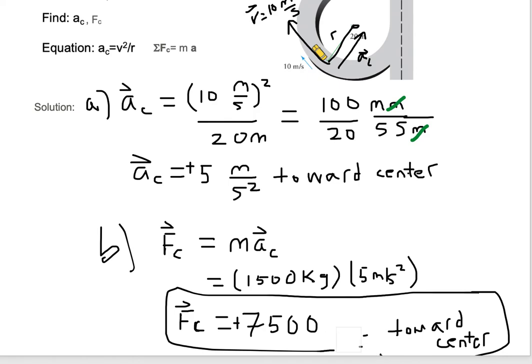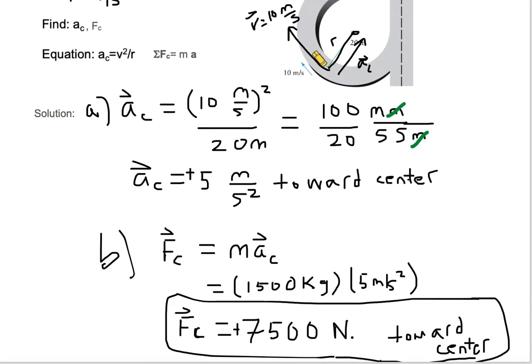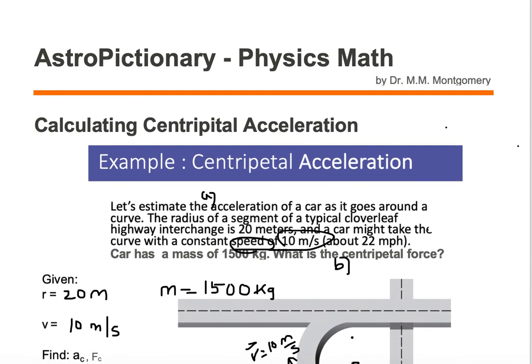Or you can just erase kilogram meter per second squared. Since we know that is a Newton, I can just put a Newton in there. And that's equally as fine. You can leave it as kilogram meter per second squared or Newtons. And that's how we solve an example of centripetal acceleration and centripetal force.